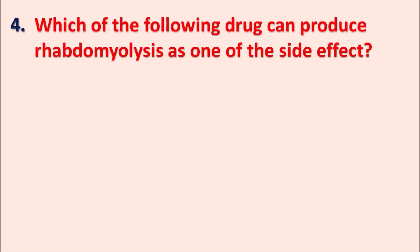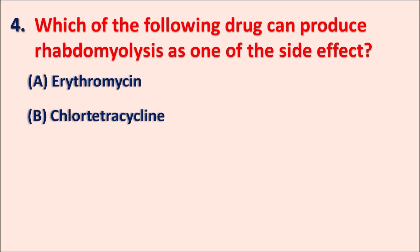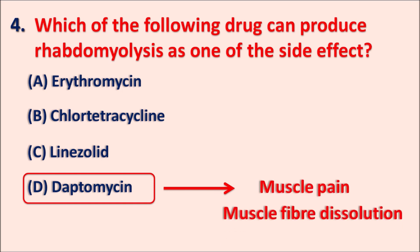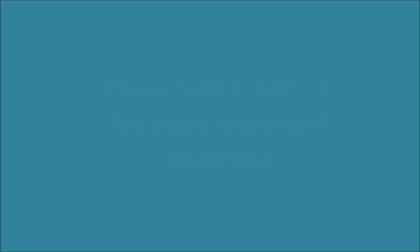Question four: Which of the following drugs can produce rhabdomyolysis as a side effect? Options: A — erythromycin, B — chlorotetracycline, C — linezolid, D — daptomycin. Rhabdomyolysis is a muscle disorder where muscle fibers are lost, resulting in muscle weakness and pain. The right answer is daptomycin — a lipopeptide that can produce rhabdomyolysis, causing muscle pain, muscle fiber dissolution, and muscle weakness. These side effects can also be increased by anti-hyperlipidemic agents like statins, which can worsen daptomycin's muscle-related side effects.